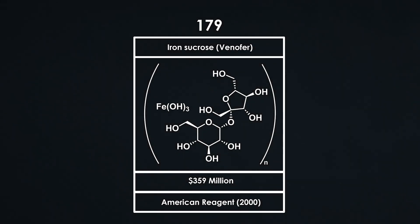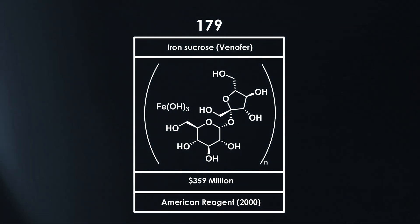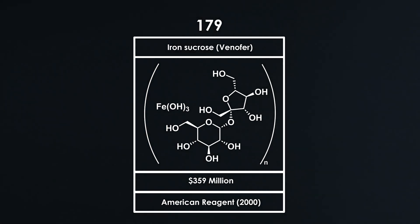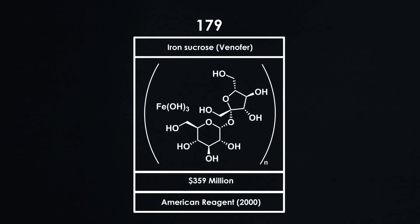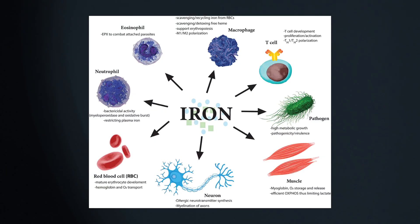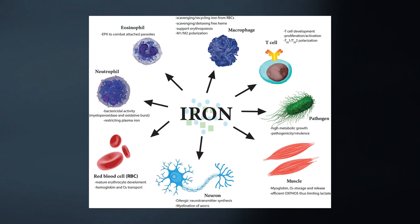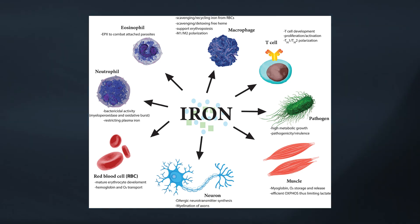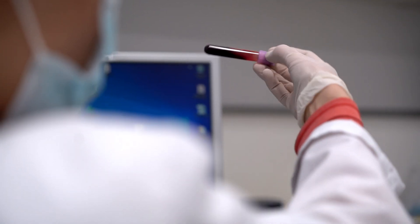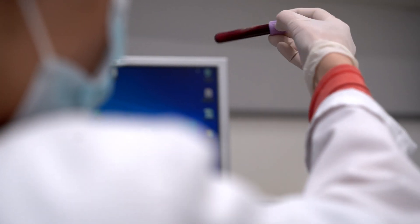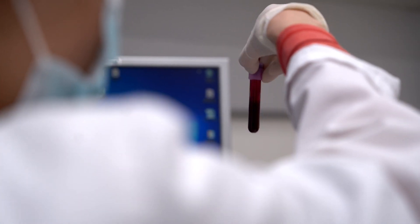Venofer is an injection of iron sucrose which generated $359 million in revenue in 2022. Iron plays a vital role in many biological processes, such as metabolism and oxygen transportation. Therefore, it is essential that your body has enough iron for all these processes.